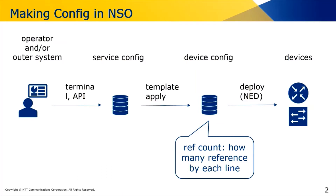In the typical NSO data flow, NSO developers define an abstract model describing what a service is. An operator or other system modifies that service config, and NSO translates it to device config and deploys it to real switches and routers. In the device config storage, ref count is a counter indicating how many service configs depend on each device config. NSO increases or decreases this ref count when translating service config to device config, and uses it to determine whether a setting should currently be in place.